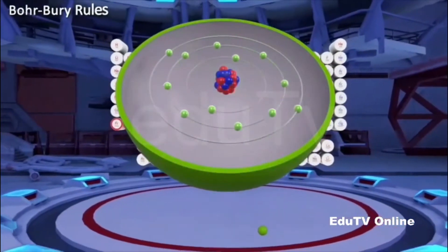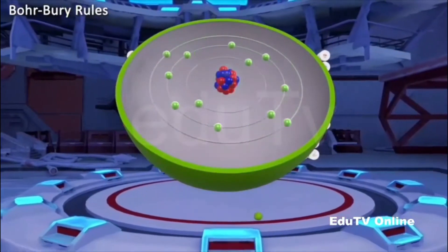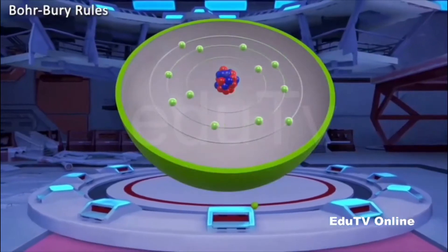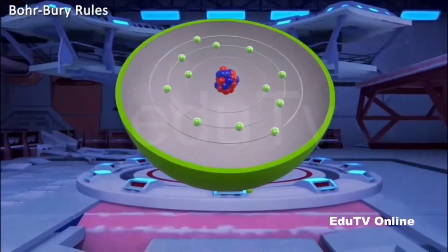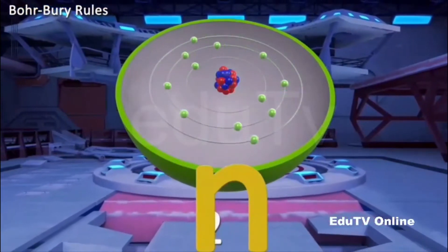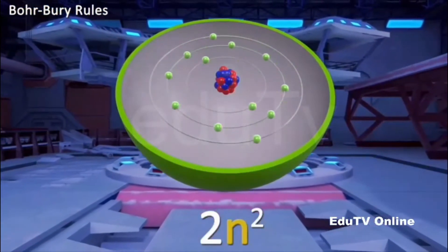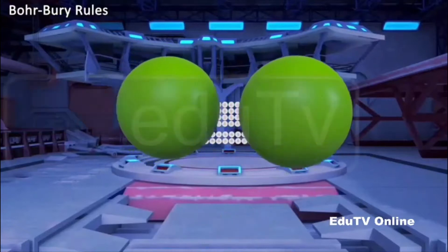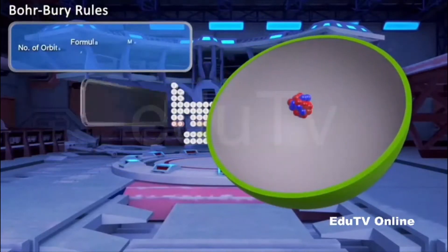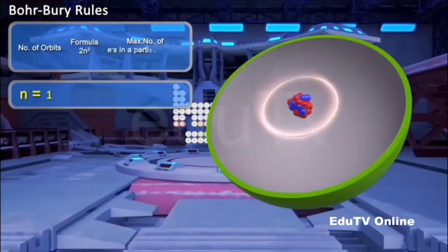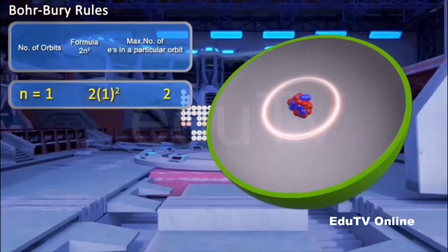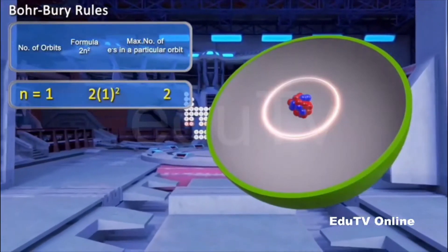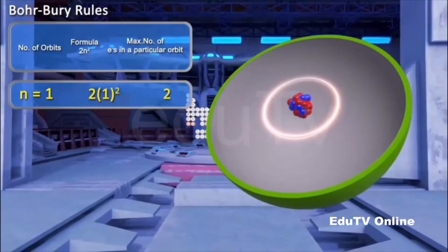The maximum number of electrons that can be accommodated in a shell is given by 2n², where n denotes the orbit number or shell number. For example, for the first orbit, n is equal to 1, therefore 2n² is equal to 2. So the K-shell can accommodate a maximum of 2 electrons.